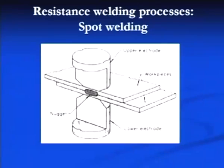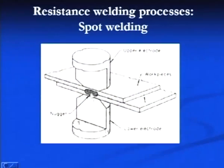R is the electrical resistance in ohms at the contact surfaces and T is the time in seconds. The amount of heat required for producing the joint depends on the material to be joined and the thickness of the plates. Nuggets are formed at the interface of the two plates because of electrical resistance heating.